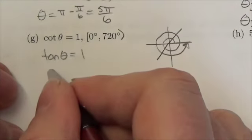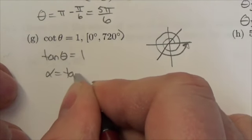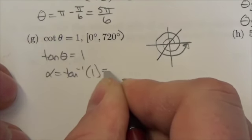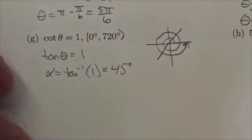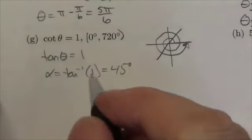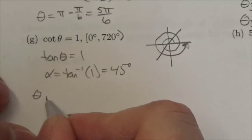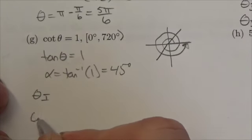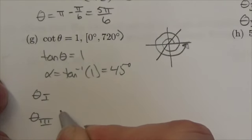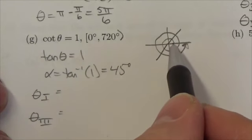Now to get my reference angle, I will do the inverse tangent of 1, and I will get 45 degrees. So now, first quadrant angles and third quadrant angles. Let's sit on this arrow here and follow it through.